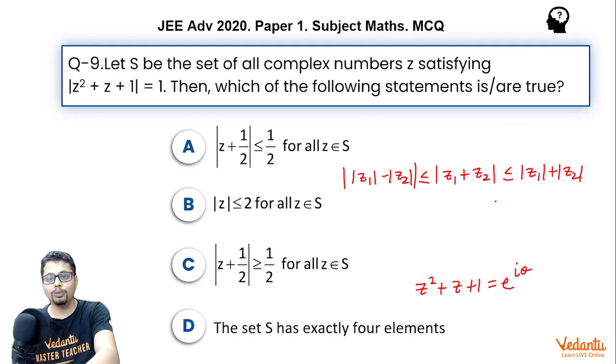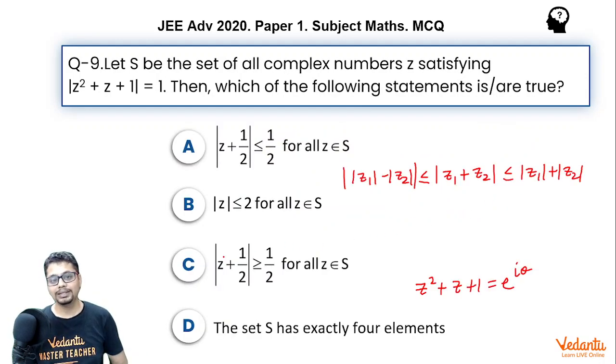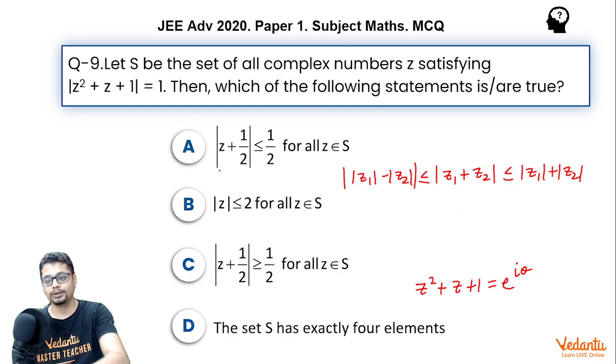So going back, this essentially means option C is correct and hence option A is wrong.